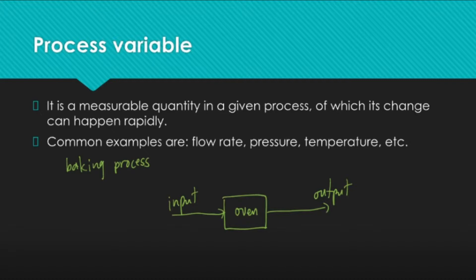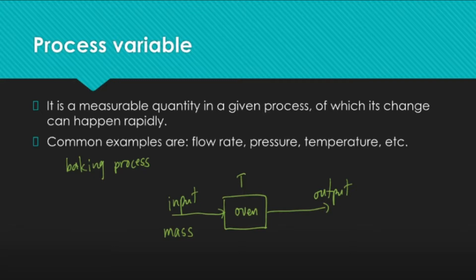Let us identify the important process variables that we might need to monitor during the baking process in the oven. First and foremost, one of the most important parameters to get right during baking is the temperature, because the temperature dictates if your bread or cake will be baked properly — not burnt or raw. So one of our process variables is temperature. Another variable is the mass of our input, because you might want to determine how much you are placing inside the oven and how much you expect as your baked product. These process variables are almost always the sources of numerical values for our calculations.